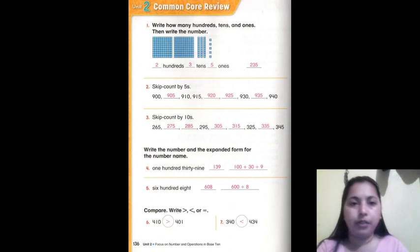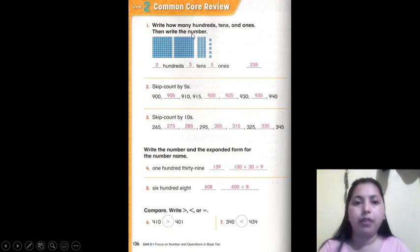This lesson is write how many hundreds, tens, and ones, then write the number. 2 hundreds, 3 tens, 5 ones. Write the number over the line: 2, 3, 5. How many is 2 hundreds plus 3 tens plus 5 ones? Equal to 235.